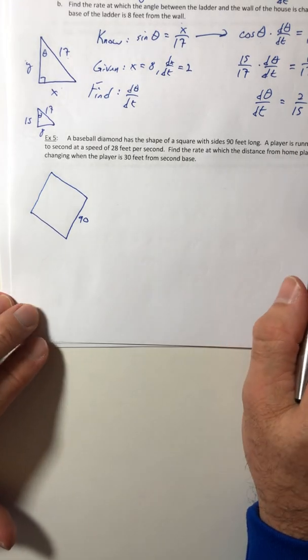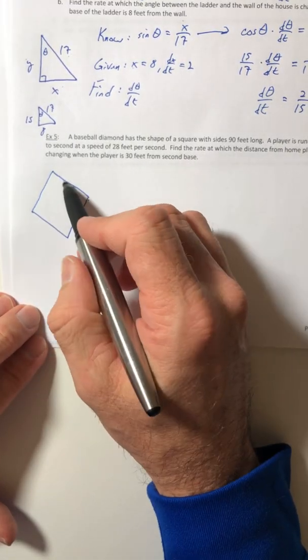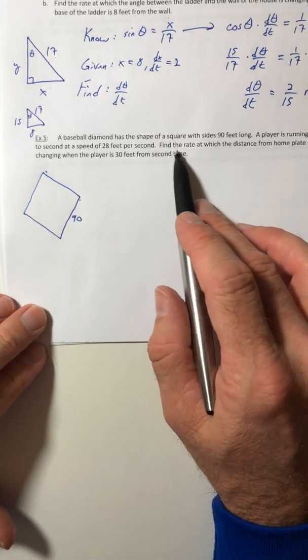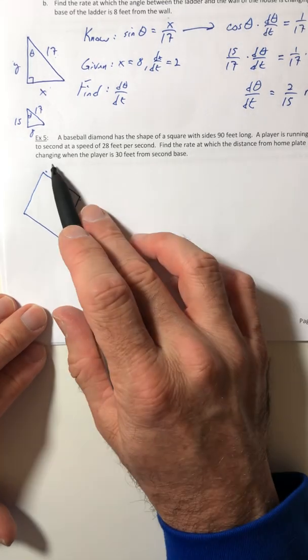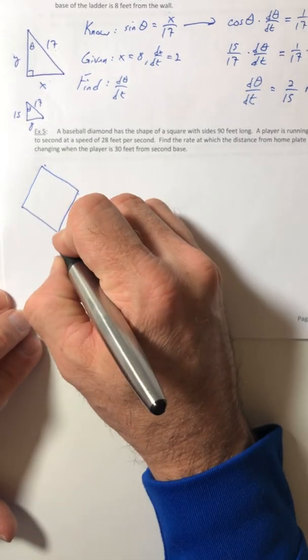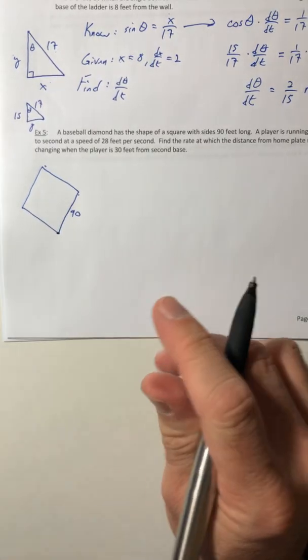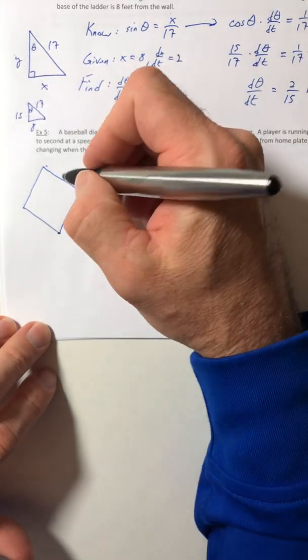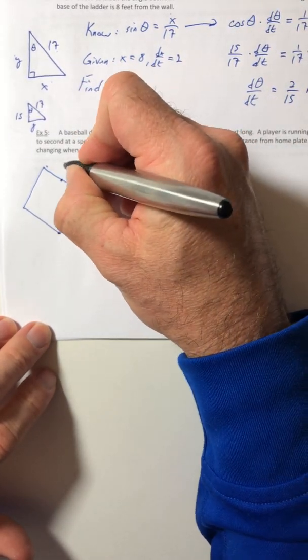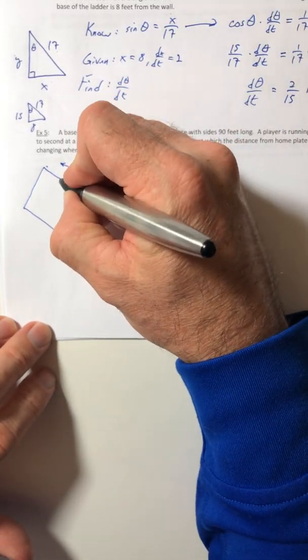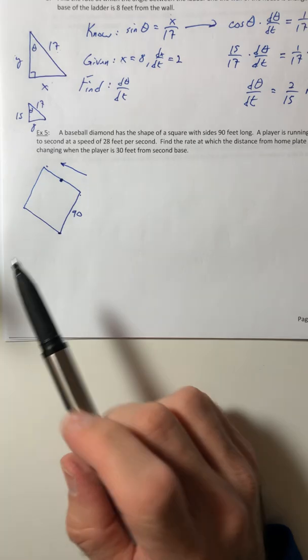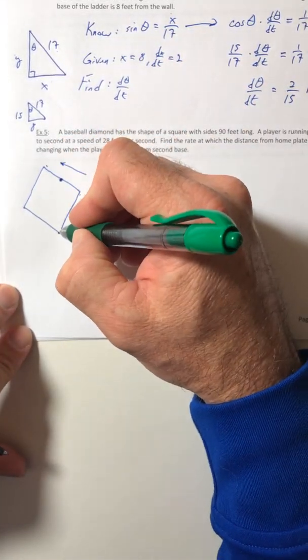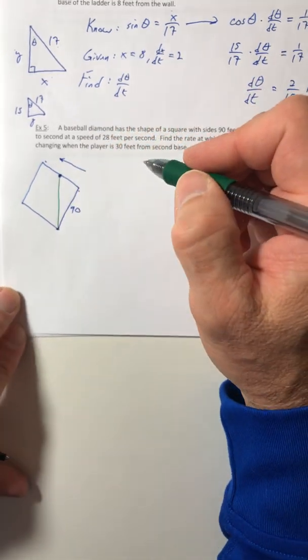A player is running from first to second at a speed of 28 feet per second. Find the rate at which the distance from home plate is changing when the player is 30 feet from second base. So here's home, and the player is running from first to second. So he's going that direction. Here he is. And it's measuring the distance from home plate to the player.